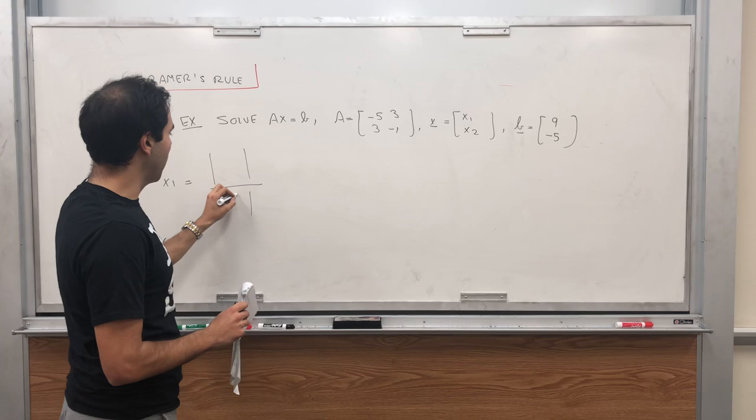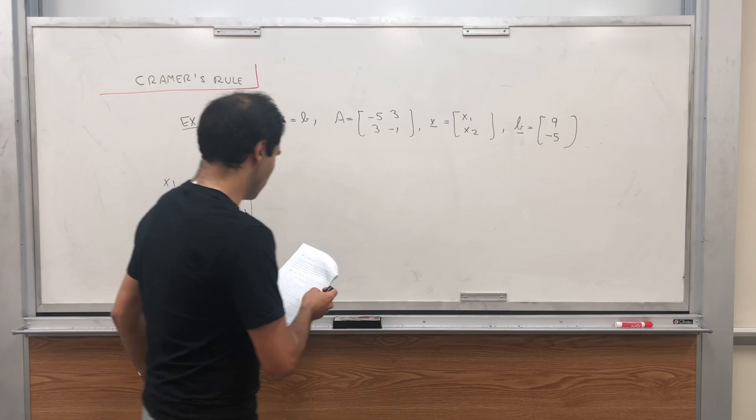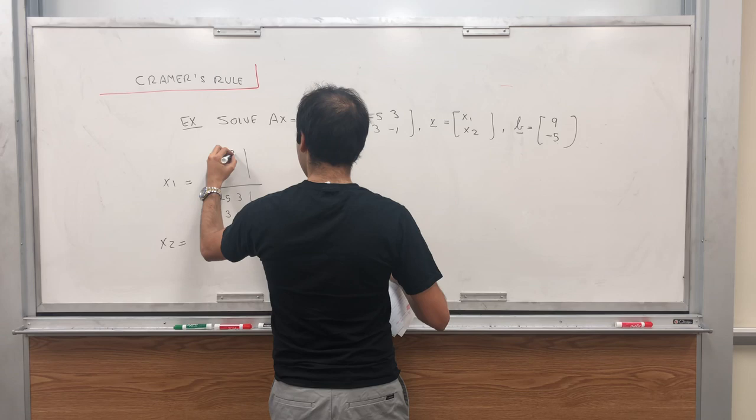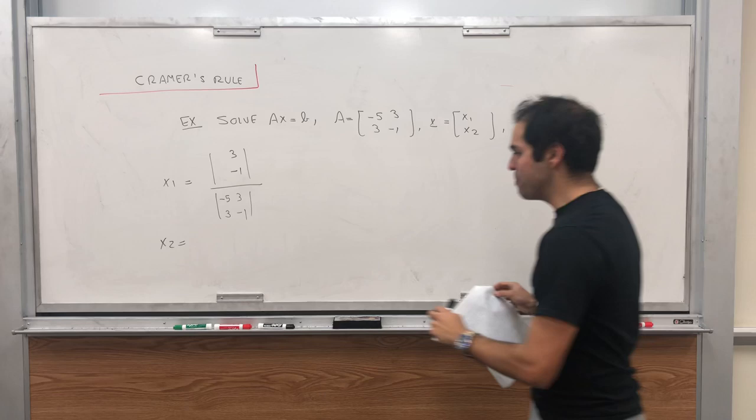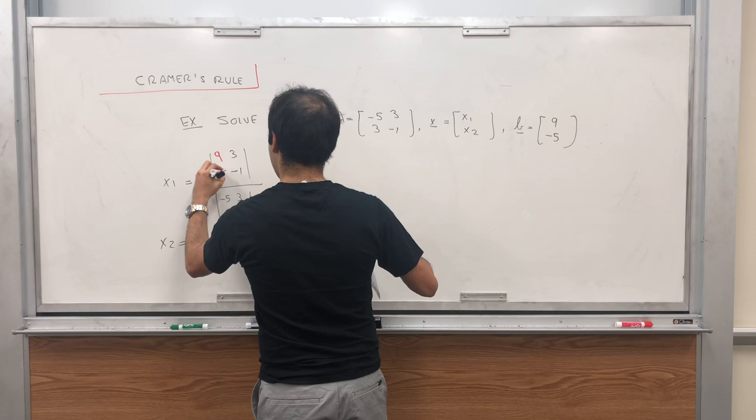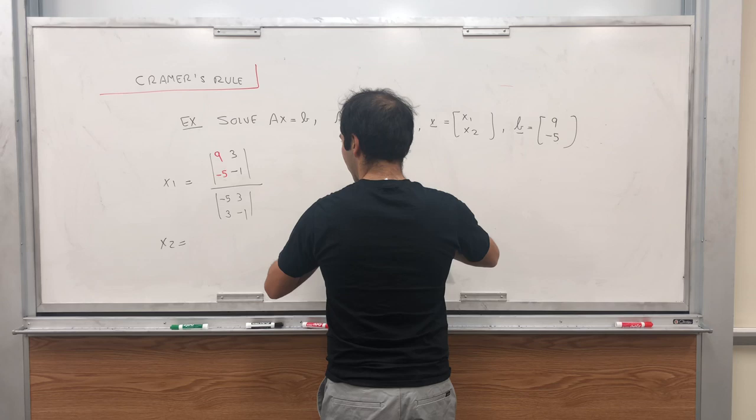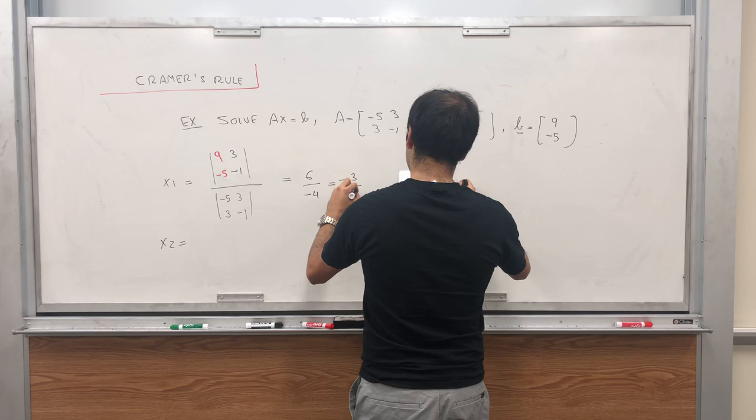The bottom being the determinant of A, which is determinant of [-5, 3; 3, -1], and the numerator is A but you replace the first column by b. So [9, -5; -5, 3]. If you do that you get 6 over -4, and that's -3/2.